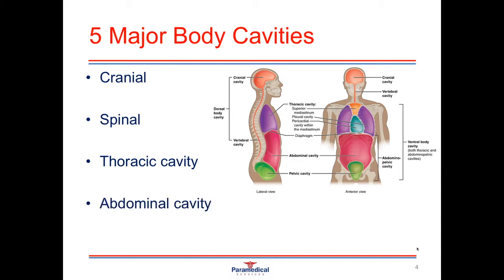The thoracic cavity is divided from the abdominal cavity by a large diaphragmatic sheet that separates the top and the bottom. The abdominal cavity is encased by membranes and is protected by the pelvis and part of the thorax.